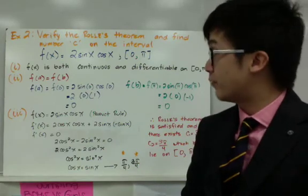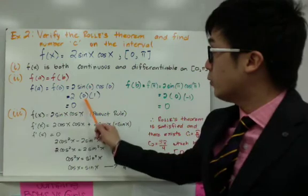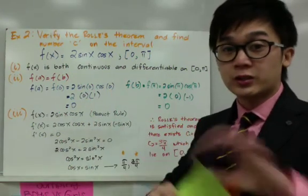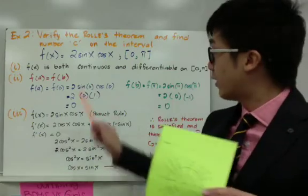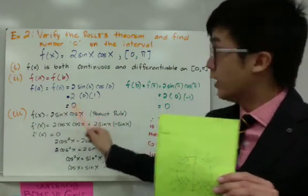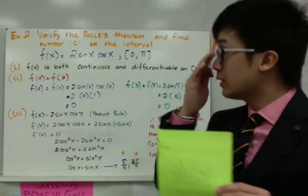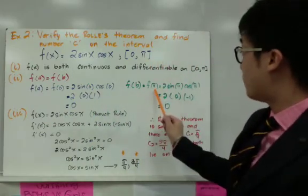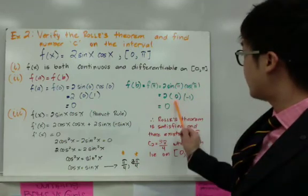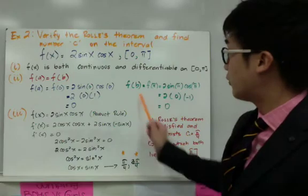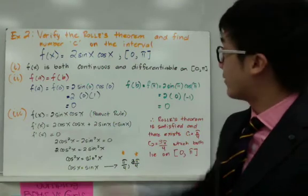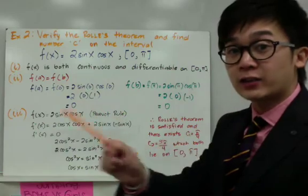We just need to verify the third condition: f of a equal to f of b. Plugging in 0 gives 2 sine 0 cosine 0. From the unit circle, sine 0 is 0 and cosine 0 is 1, so 2 times 0 times 1 equals 0, giving f of a equal to 0. For f of π, we get 2 sine π cosine π. Sine π is 0 and cosine π is negative 1, giving f of b equal to 0. The third condition is satisfied, and we are ready to find point c in [0, π].